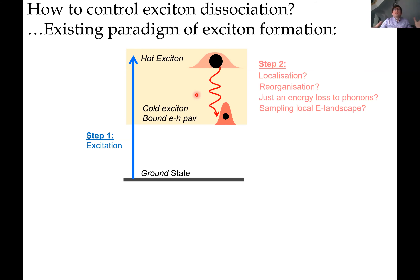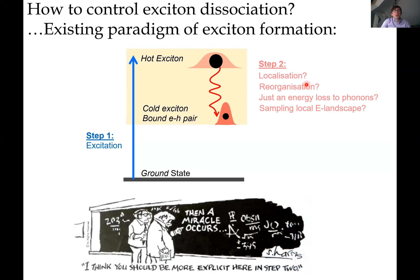Eventually, after all is done, the exciton becomes what you might call a cold exciton or bound electron-hole pair, more or less localized at a certain point in space. We know where we start and where we end, but there are different ideas about what's happening in between. Surprisingly, there is very little known from an experimental point of view about what actually goes on during this process.